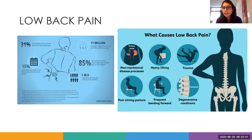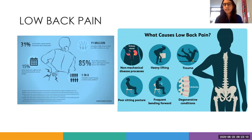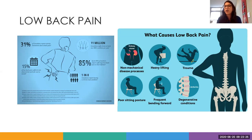Heavy lifting is another well-known cause. If you lift a heavy box, you can suddenly get pain, or the next day you end up with a sore back. But it's not just about how heavy something is — it's about the way you lift it. You should never bend forward and lift. Always keep your back straight, squat with your knees, and then lift. Even if you're picking up a pen, you should lift the same way. Always keep your back straight, bend with your knees, and then lift — doing otherwise over the years leads to pain.